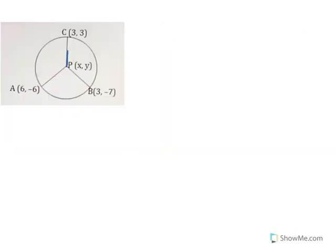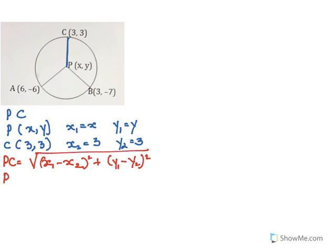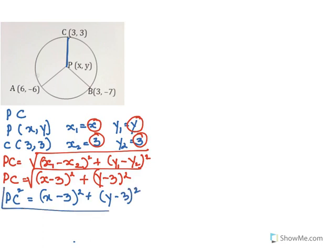Now we find PC. P is (x, y) so x1 = x, y1 = y, and C is (3, 3) so x2 = 3, y2 = 3. Using the distance formula: PC = √((x - 3)² + (y - 3)²). Squaring both sides: PC² = (x - 3)² + (y - 3)².